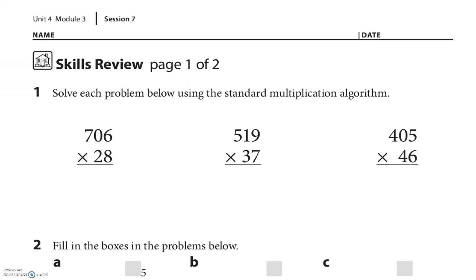Hey everybody, this is Unit 4 Module 3 Session 7 — it's a skills review, so it's going to go over a few things we've done already. This first part is a standard algorithm, so this is just following the process.